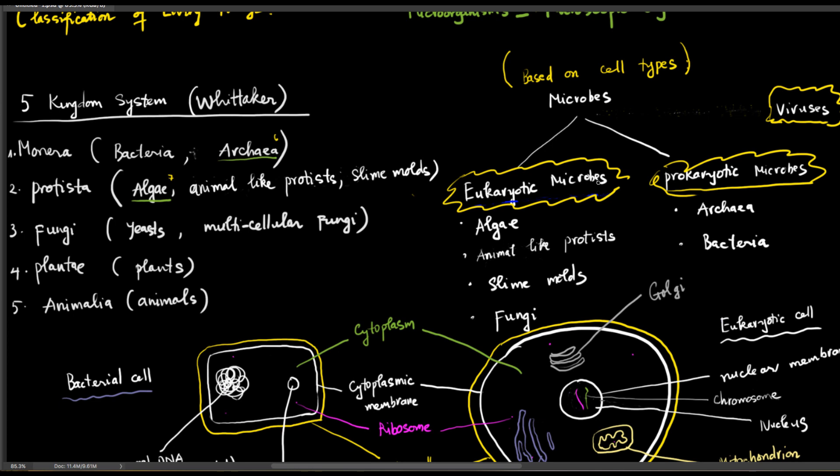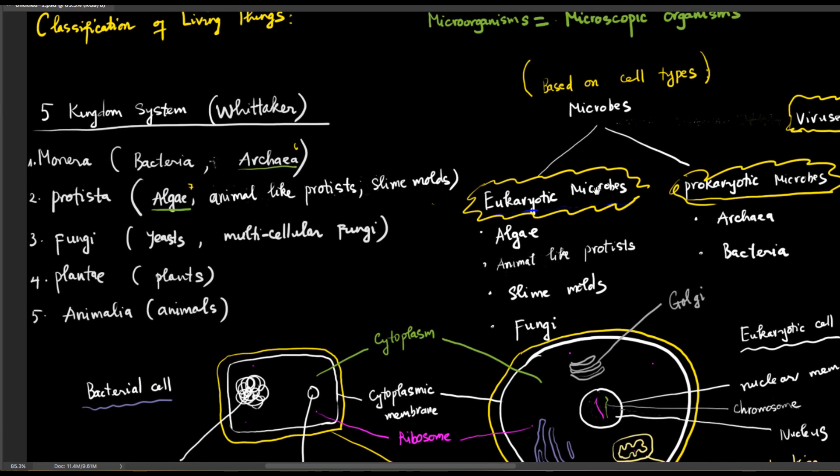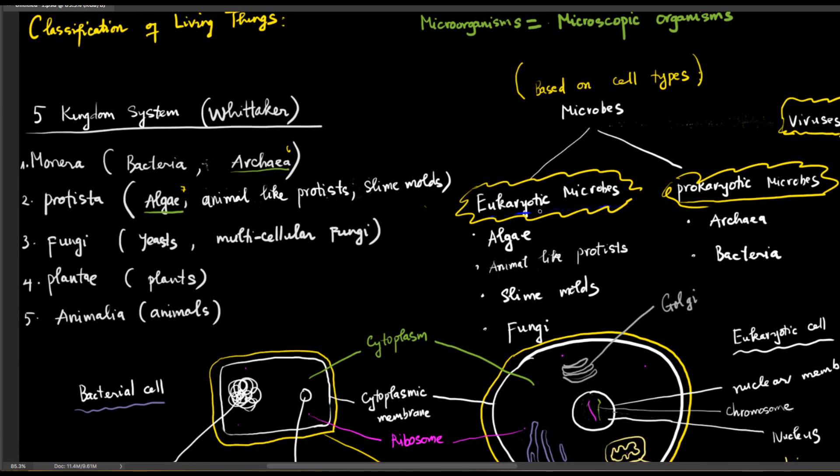Based on cell type, you can further divide microorganisms into two groups: eukaryotic microorganisms and prokaryotic microorganisms. Eukaryotic microorganisms have a eukaryotic cell type, just like plants and animals. Prokaryotic microorganisms have a prokaryotic cell type.